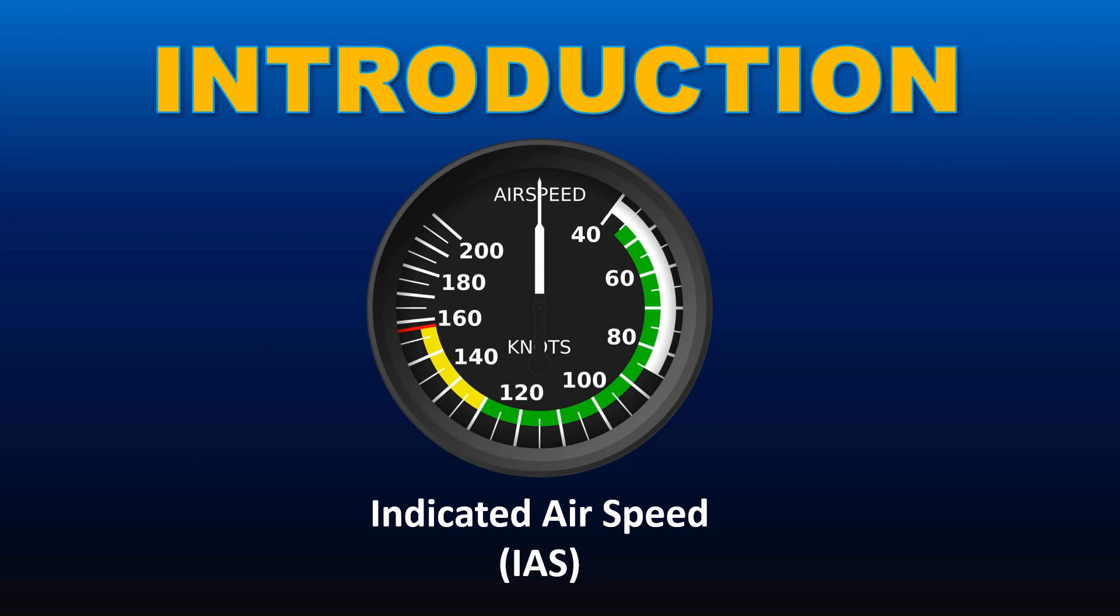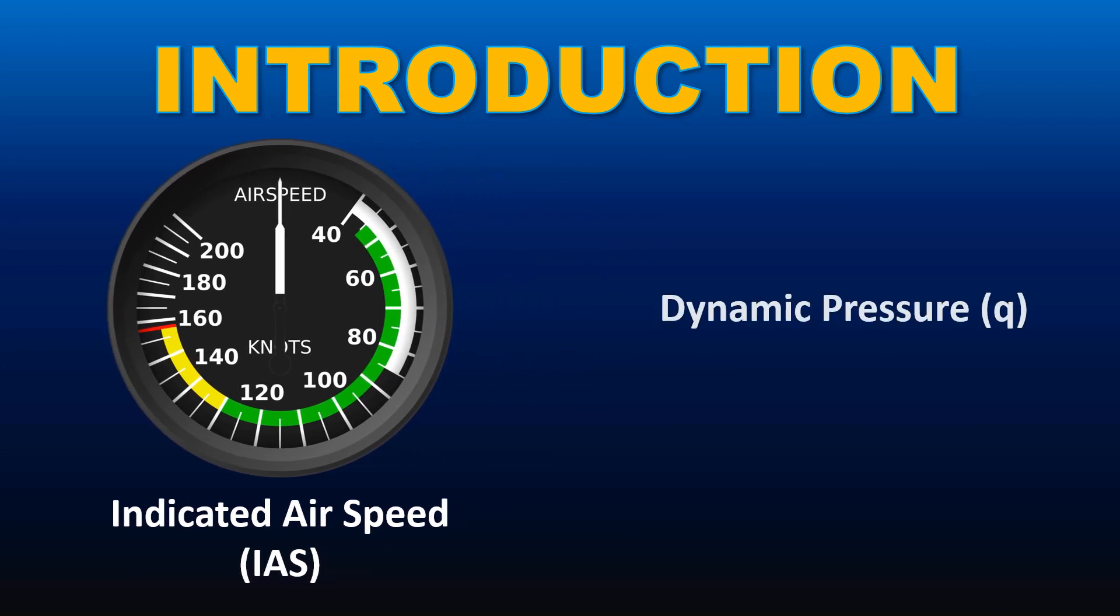Airspeed indicators give you indicated airspeed based on the dynamic pressure which is usually written as Q. Dynamic pressure equals half density multiply with velocity squared. If we transpose this formula, we can get the speed.